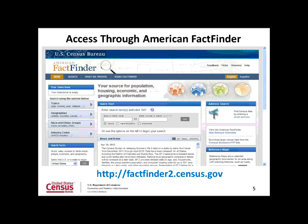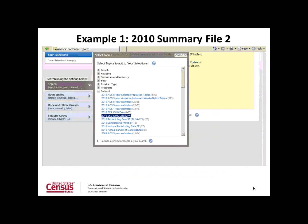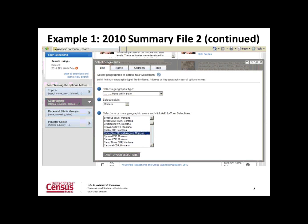Census data can be found by going to the American FactFinder 2 website. For the first example, let's get 2010 data on the total AIAN population 22 years old and younger in Butte, Montana — available in the 2010 Summary File 2 product. First, under the Topics drop-down menu, click on Data Set to expand the selections, then select 2010 SF2 100% data. After making your selection, close the pop-up window. Next, select your desired geography by clicking on the Geographies menu on the left-hand side.